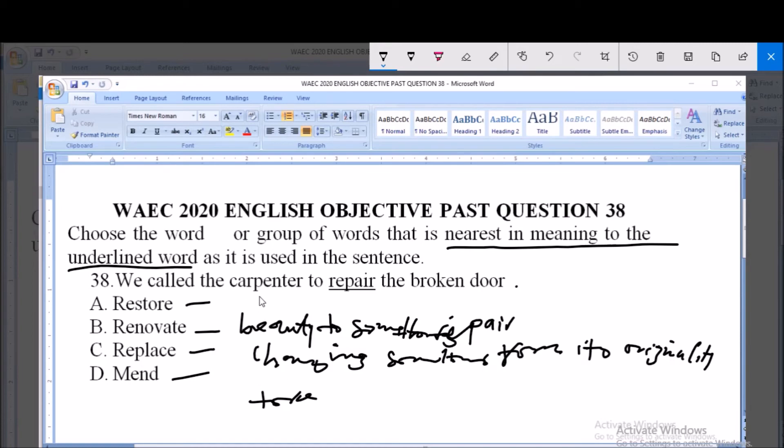That's what I'm saying: it has to do with the nature of the sentence, because here we are talking about a vocation, which is carpenter. We call the carpenter to repair the broken door. So the same way a tailor or tailoring is also a vocation, they are similar professions because they are both vocations.